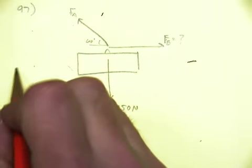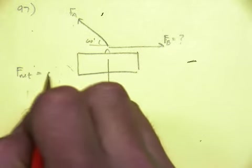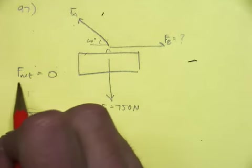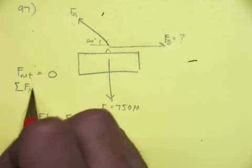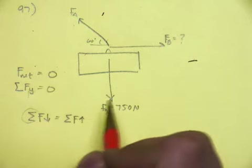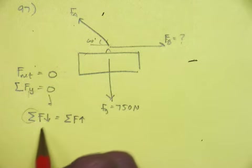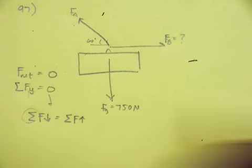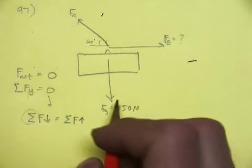So I guess I could start here. That the net force is zero. So that means that the sum of all the forces in the y direction is zero. And that's what this is. This means that everything that pulls down equals everything that pulls up. So let's take a look at this.